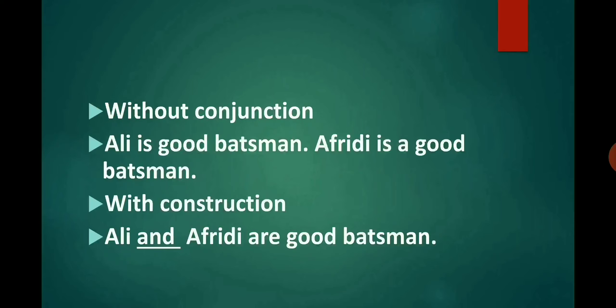Now let's see how conjunctions join sentences. First we will see examples without using conjunctions and then with conjunctions. The sentences are: Ali is a good batsman. Afridi is a good batsman. These are two separate sentences giving information about two batsmen. We can join them into one: Ali and Afridi are good batsmen. You see how 'and' converted two sentences into one without affecting the meaning.